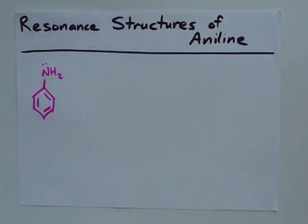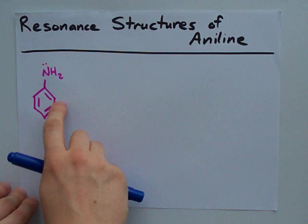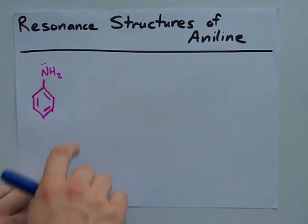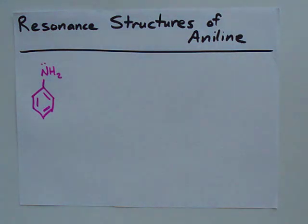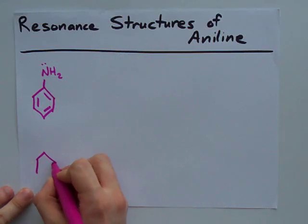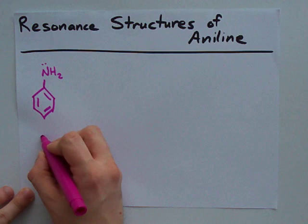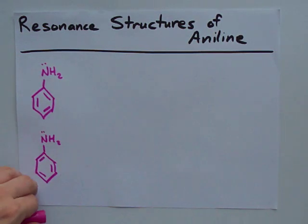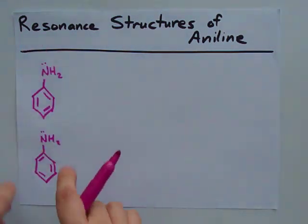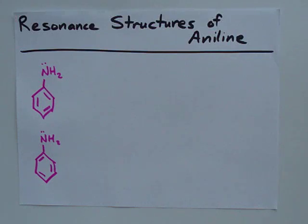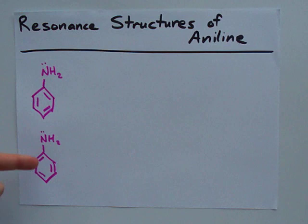Welcome to the Lewis structures of aniline. Aniline is a benzene with an amino group on it — an NH2. The most obvious Lewis structure is the benzene ring with the electrons delocalized. There are no double and single bonds in benzene; they're all one and a half bonds and the electrons are delocalized in the whole ring. This is technically a resonance structure because the electrons are displaced while the atoms are still connected in the same way.